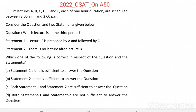Question 50. Six lectures A, B, C, D, E and F, each of one hour duration, are scheduled between 8 am and 2 pm. Consider the question and two statements given below. Question: Which lecture is in the third period? Statement 1: Lecture F is preceded by A and followed by C. Statement 2: There is no lecture after B. Which one of the following is correct in respect of the question and the statements?